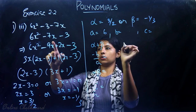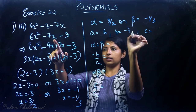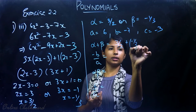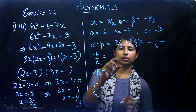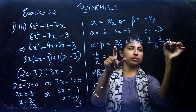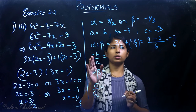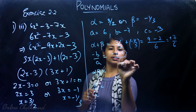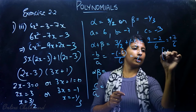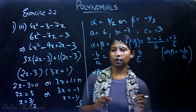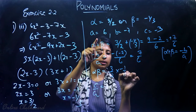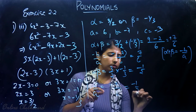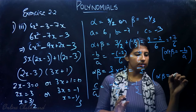So a = 6, coefficient of x (b) = -7, constant c = -3. Checking α + β: 3/2 + (-1/3) = 9/6 - 2/6 = 7/6. And -b/a = -(-7)/6 = 7/6. Equal. Now α·β = 3/2 × (-1/3) = -1/2, and c/a = -3/6 = -1/2. Equal. Both relations verified.